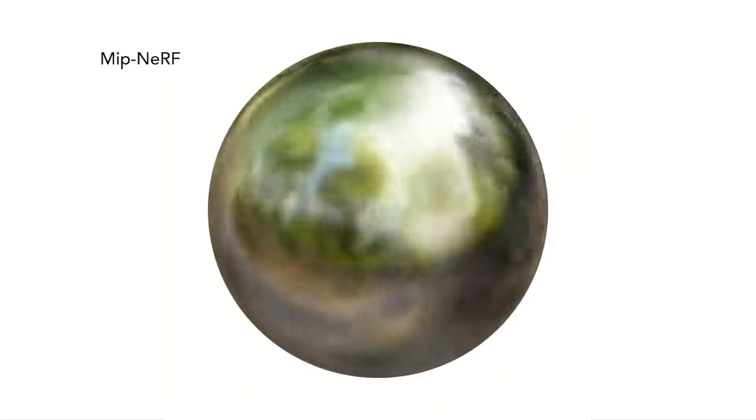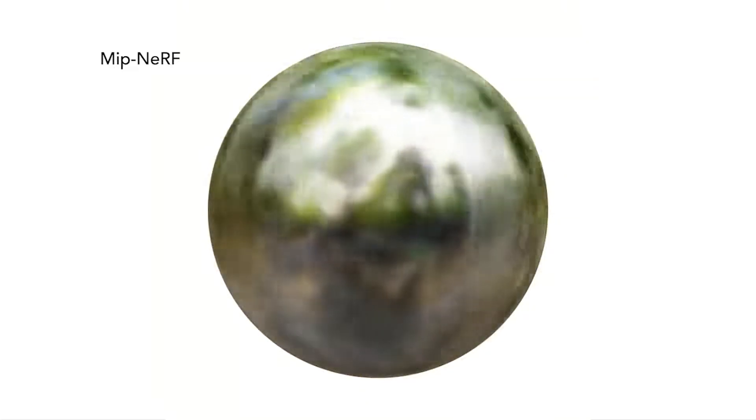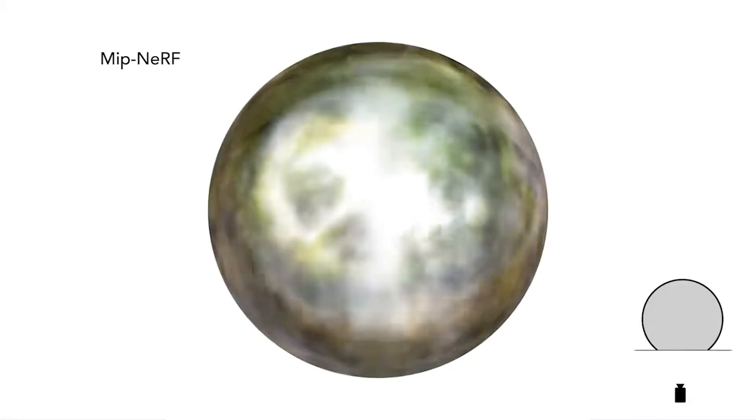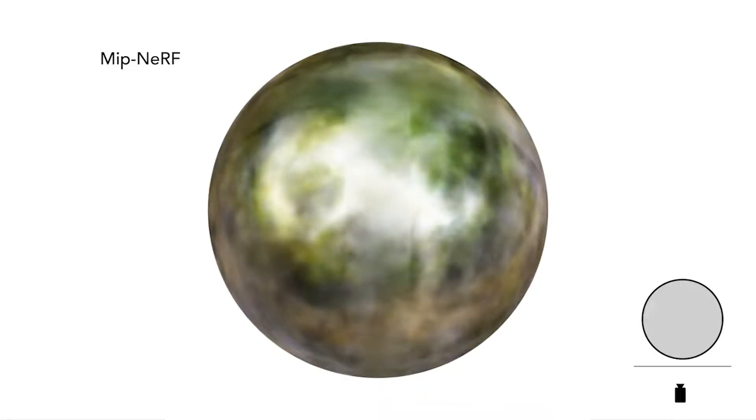If you train MipNeRF on 100 images of this ball, here's what it recovers. The specular reflections appear as fog that fades in and out rather than sharp reflections that move smoothly across the surface. Rendering the scene from back to front reveals what's causing this issue. NeRF is representing specular reflections as glowing emitters that shine through a foggy surface instead of correctly replicating the view-dependent appearance of points on the surface.